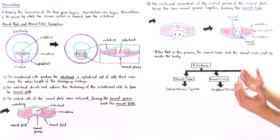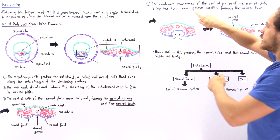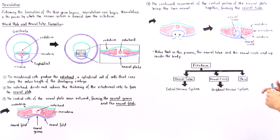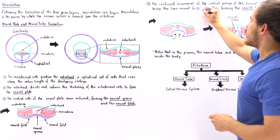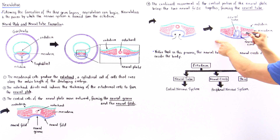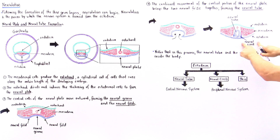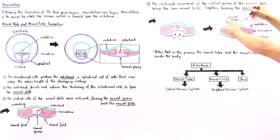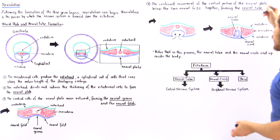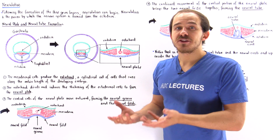The continual motion of the neural plate eventually brings the two neural folds together. When these two neural folds touch, they form a cylindrical structure known as the neural tube, and we also have two tiny extensions known as the neural crests. The neural tube eventually forms the brain and the spinal cord — it forms the central nervous system. The two neural crests give rise to the peripheral nervous system, specifically the ganglia found outside the brain and spinal cord.